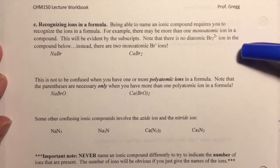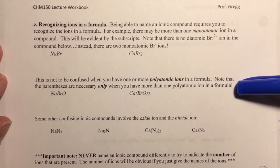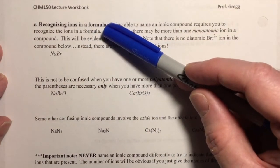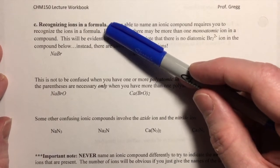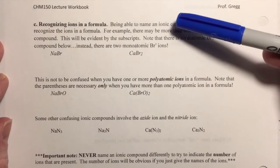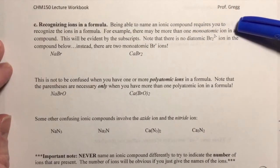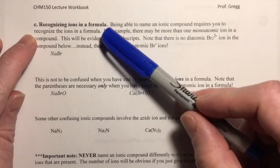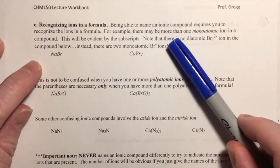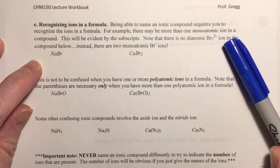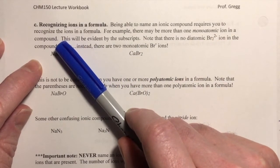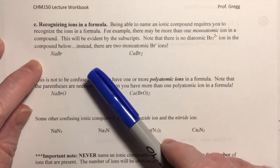For the second category, B, ionic compounds, it is important to be able to recognize ions in a formula. That's what's going to tell you if you have an ionic compound. Being able to name an ionic compound requires you to be able to recognize the ions that are in the formula. For example, there may be more than one monoatomic ion in a compound, and you have to recognize that you have more than one monoatomic ion.